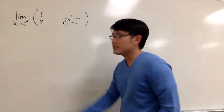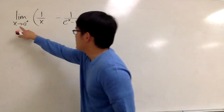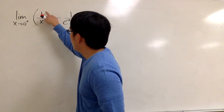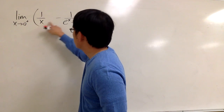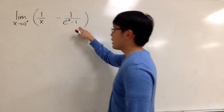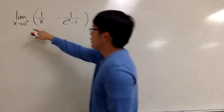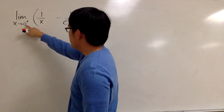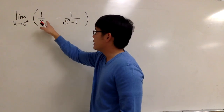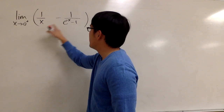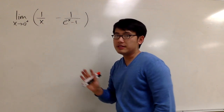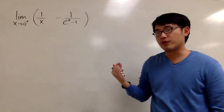Let's compute the limit. The limit is x approaching 0 plus of 1 over x minus 1 over e to the x minus 1. Real quick, plugging 0 into all the x, we are going to get infinity minus infinity. So in this case, we have to do more work for this.